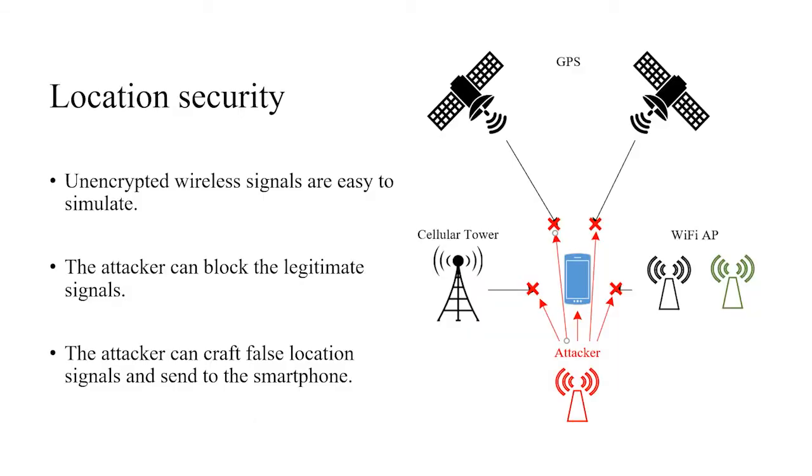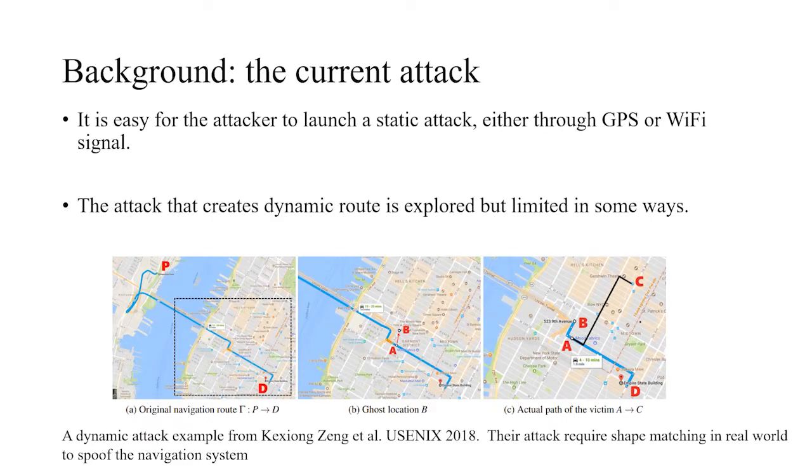However, this localization system has some security issues. As we know, all those signals are unencrypted and easy to simulate. The attacker can actually block the legitimate signals, as we can see in this figure, and the attacker can transfer the crafted false location signals and send to the smartphone, letting the smartphone believe it's at another location than the ground truth.